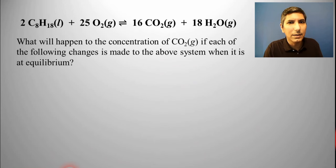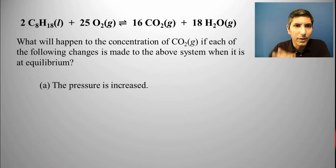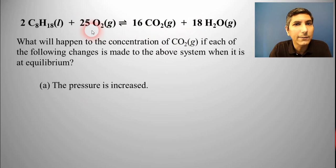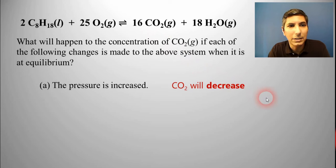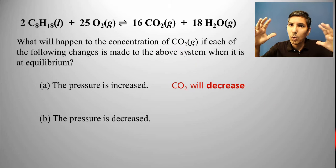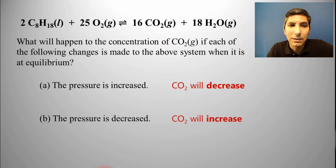Let's try this example again with that same reaction. What's going to happen if we increase the pressure — that's decreasing the volume? It's going to go toward the side that has fewer moles of gas. We have 25 moles of gas versus about 34, so it's going to shift toward the left side — that means carbon dioxide will decrease. Likewise, if we decrease the pressure, it's going to go toward the side that has more moles of gas, so carbon dioxide along with water vapor would increase.